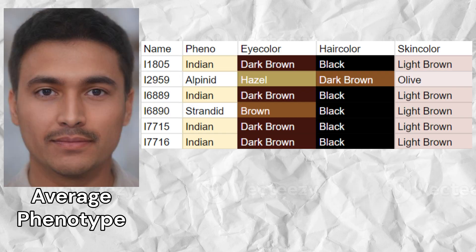The most common predicted phenotype was Indian, with four samples scoring this phenotype. Additionally, one sample scored an Alpinid phenotype and one sample scored a Strandid phenotype. Here is a morph of the average predicted phenotype. The most common predicted eye color among the samples was dark brown, but one sample also scored hazel eye color. The sample that scored hazel eyes is autosomally most similar to Pashtuns.